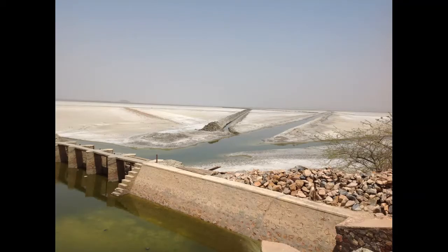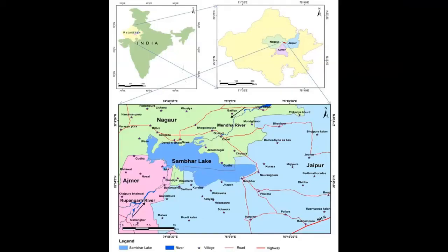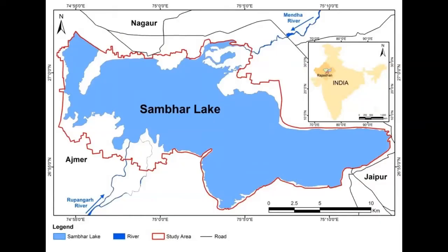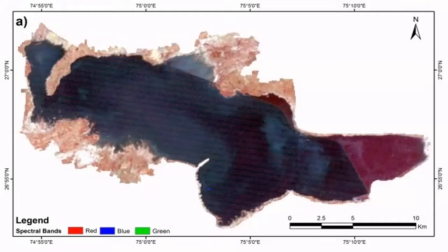Sambur Lake in Rajasthan, India is the major inland saltwater lake spread across the districts of Ajmer, Jaipur, and Nagaur. The lake receives water inflow from two major rivers, that is Rapangarh and Mendha.